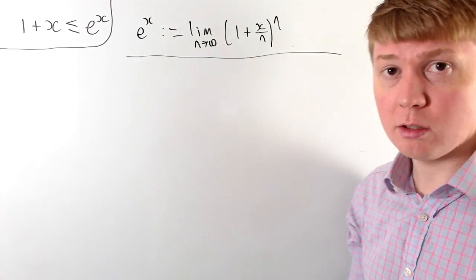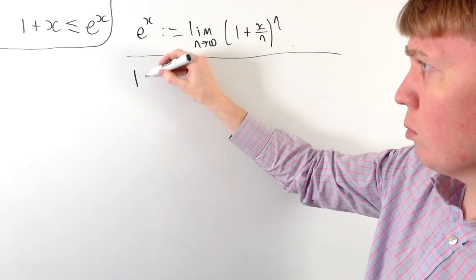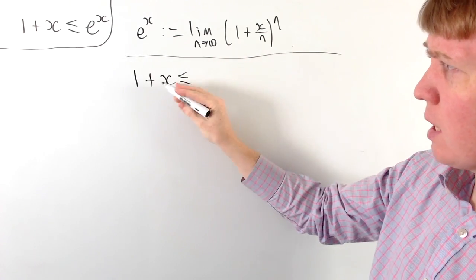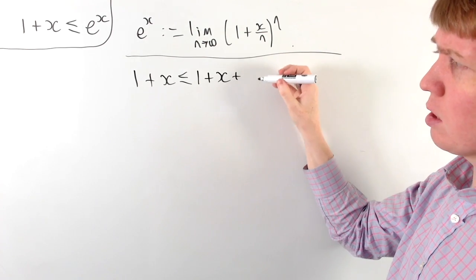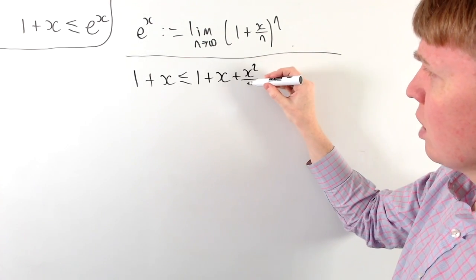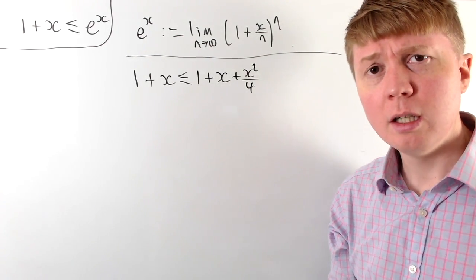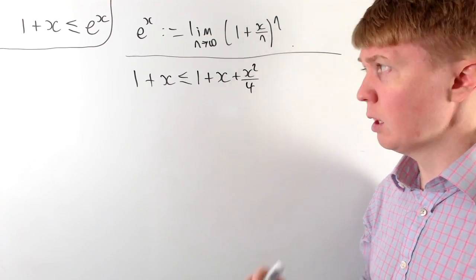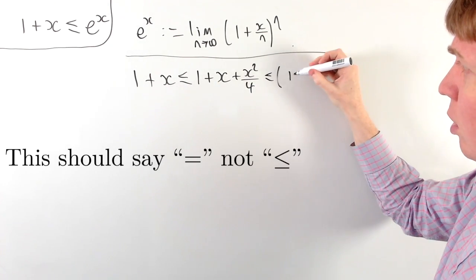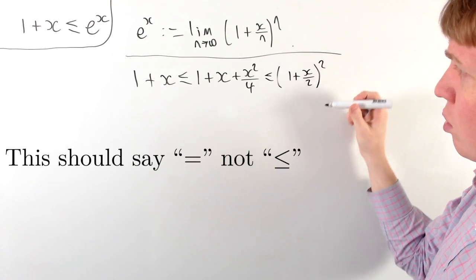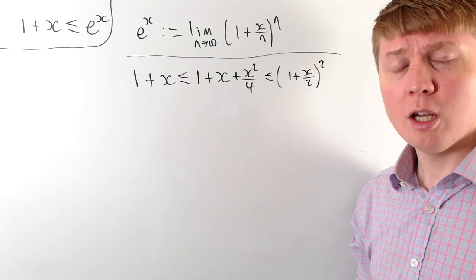This first proof essentially uses the same sort of inequality over and over iteratively. Starting with 1 plus x, we know that 1 plus x is going to be less than or equal to 1 plus x plus anything positive. If we add x squared over 4, this inequality is certainly true. The reason is that when we factorise this quadratic, we get 1 plus x over 2, all squared — you can check that expanding gives 1 plus x plus x squared over 4.